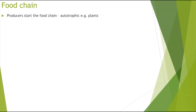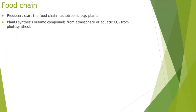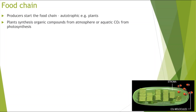First, looking at the food chain: we have producers, which start the food chain. These are called autotrophic — they make their own food. For example, plants can synthesize organic compounds from the atmosphere, getting CO2 from the atmosphere or, if they're aquatic plants, from the water, and then photosynthesize to produce organic compounds.